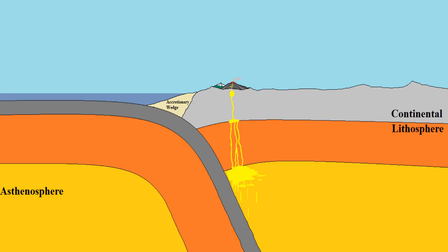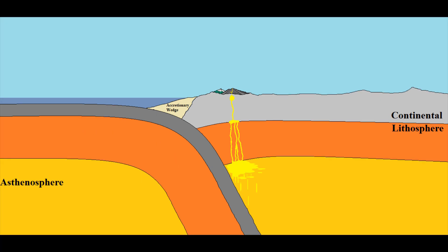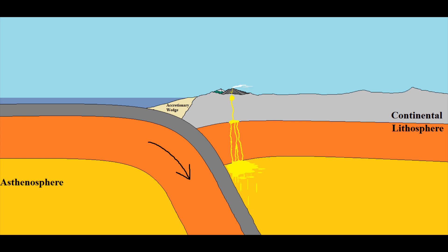Next, we have the oceanic-continental convergent plate boundary. This is where oceanic crust is colliding with continental crust. Since oceanic crust is more dense than continental crust, it easily subducts below it. Similar to oceanic-oceanic convergent plate boundaries, continental-oceanic convergent plate boundaries also generate melt, and the magma will reach its way to the surface and erupt from a volcano, creating a volcanic-continental arc.